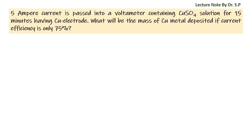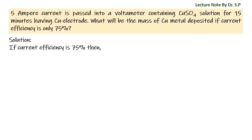We have a question: 5 ampere current is passed into a voltmeter containing copper sulfate solution for 15 minutes, having copper electrodes. What will be the mass of copper metal deposited if current efficiency is only 75 percent?